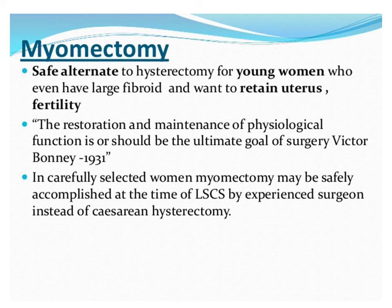One important point: myomectomy at the time of cesarean section — if the patient has fibroids and is pregnant and delivering by cesarean section, only a pedunculated fibroid should be removed at that time. If it is intramural or at some other location, it should not be removed, because that can lead to torrential hemorrhage and sometimes necessitate cesarean hysterectomy. We have to be very careful about that.